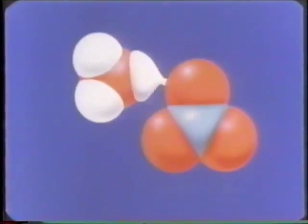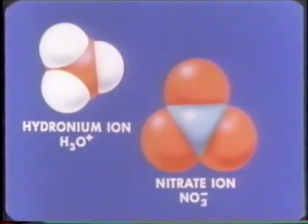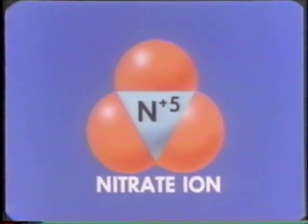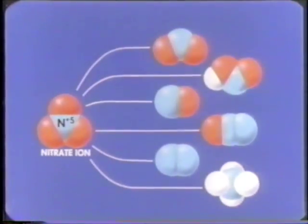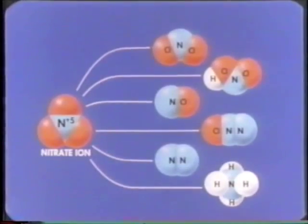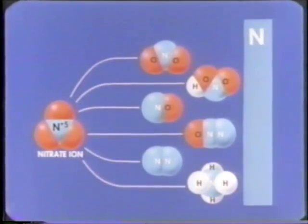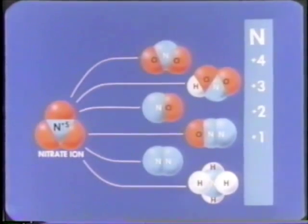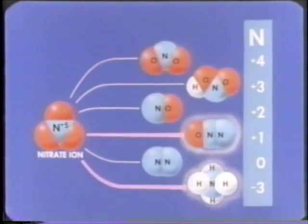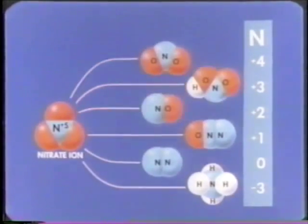Let's investigate the oxidizing power of nitric acid, which acts in such different ways. Nitric acid in water solution exists largely as hydronium and nitrate ions. In both nitric acid and the nitrate ion, the nitrogen atom has an oxidation state of +5. It can be reduced to a number of products, such as NO2, HNO2, NO, N2O, N2, and NH4+, among others. The nitrogen in these products ranges in oxidation state from +4 to -3. In most nitric acid reactions, several of these products form, but usually one reaction predominates.